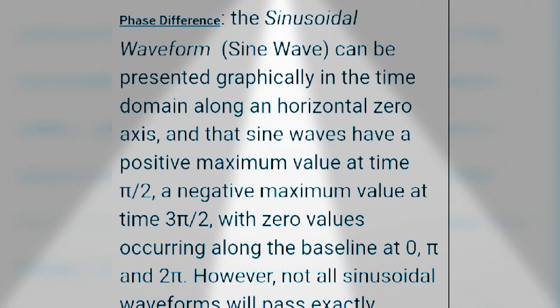A negative maximum value at 3π/2, with zero values occurring along the baseline at 0, π, and 2π. However, not all sinusoidal waveforms will pass exactly through the zero axis point at the same time.